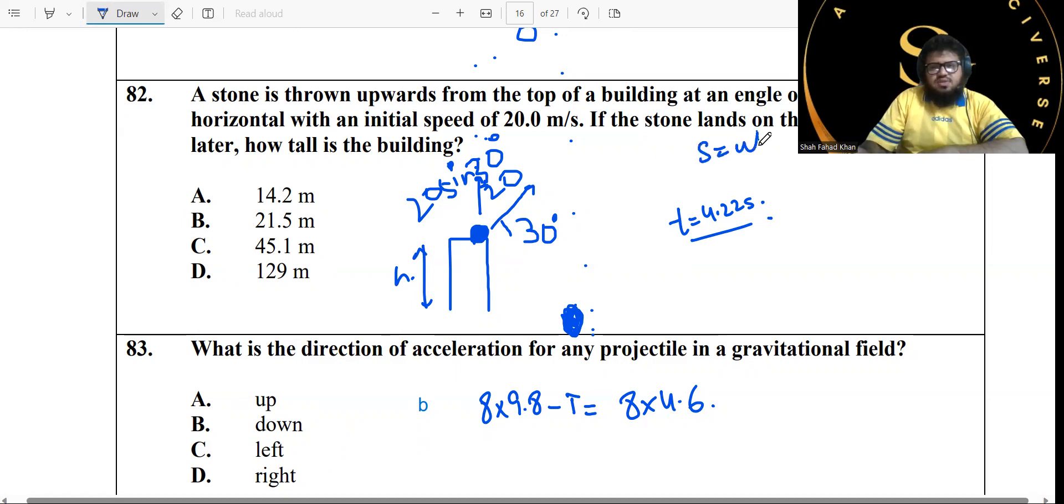The total time it took to reach the ground was 3.22 seconds, and how tall is this building? That's the question. All you need to do is use the formula s equals ut plus half at squared. But before you use this formula, you'll need to know the vertical component of velocity. Once you know the vertical component of velocity, it's 20 sine of 30. The vertical component is v sine theta, so this is 20 sine of 30. Sine of 30, the value you should know, is 0.5.